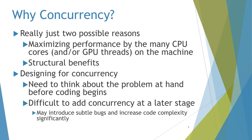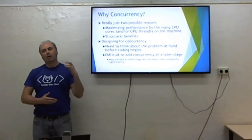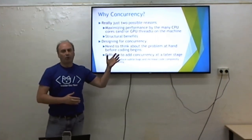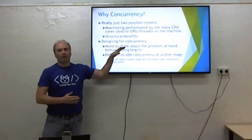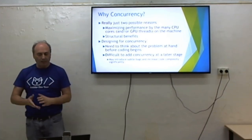There are basically just two reasons to use concurrency. The first one is to maximize performance. We're in a multi-core era with many CPUs, and we want to maximize our performance. People writing in C++ typically care about performance. The other reason is just for design purposes — if you can think of any reason to do things concurrently, it will fall into one of these two categories.